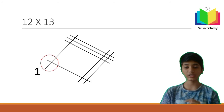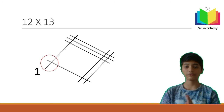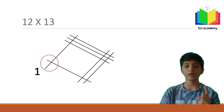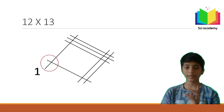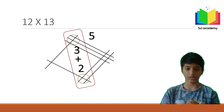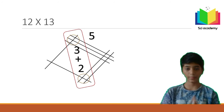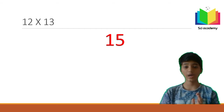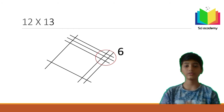Now we count the intersections. In the first circle on the left, there is only one intersection, so we write 1. In the middle circle, there are three and two intersections — adding them gives us 5.